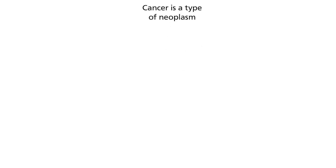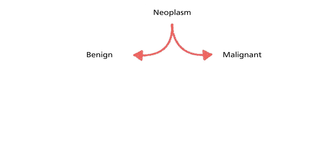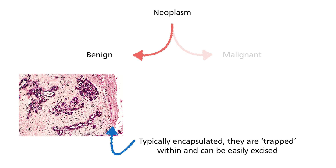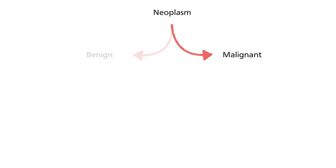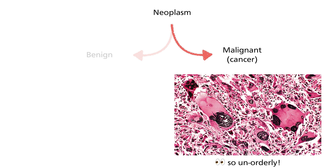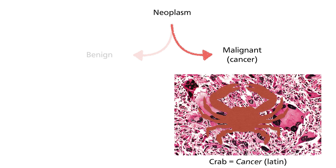Cancer is scientifically described as neoplasms, that is, new growths. Neoplasms can be divided into two: benign and malignant. Benign neoplasms are generally harmless, and in many cases surgical excision will typically be curative. It is the malignant neoplasm that is of concern, and is generally referred to as cancer. The name cancer also reflects the unorderly way of invasion of surrounding tissues, almost like the shape of a crab, which in Latin is known as cancer.